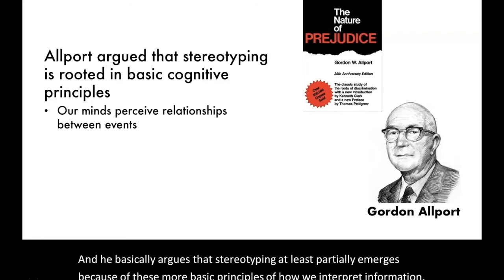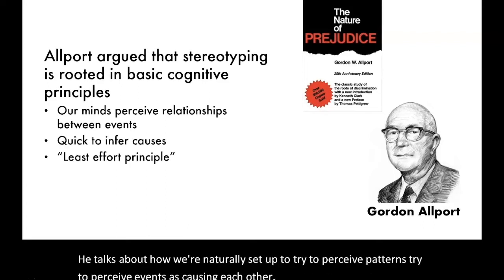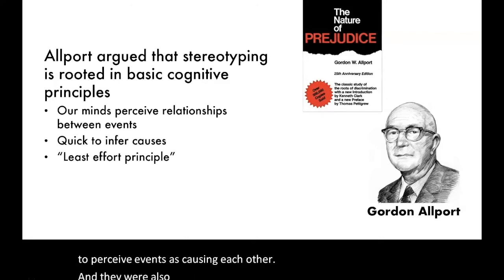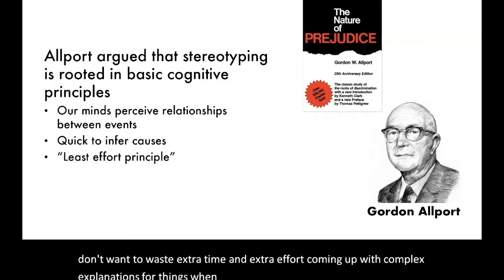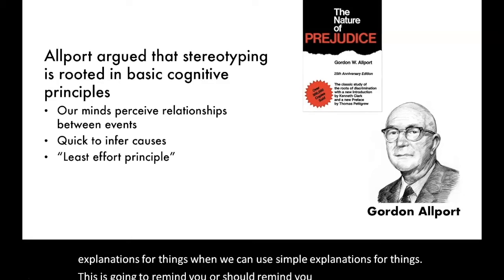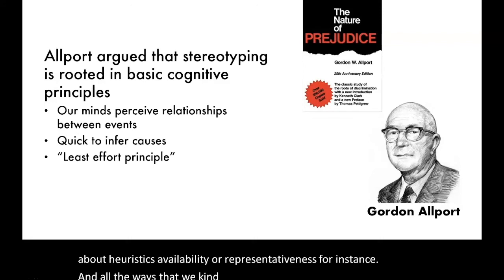Allport talks about how we're naturally set up to try to perceive patterns, to perceive events as causing each other, and that we're also operating on this cognitive miser principle. We don't want to waste extra time and effort coming up with complex explanations when we can use simple ones. This should remind you of when we talked about heuristics — availability or representativeness — and all the ways that we leap to assumptions based on fairly small amounts of information.